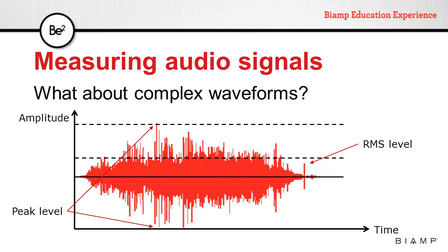But what about complex waveforms? Where is the RMS level, and how do we calculate it? Audio signals are complex waveforms made of multiple frequencies. It is relatively easy to find the peak levels, but calculating the RMS level is far more complex. Two signals that have the same peak level will not necessarily have the same RMS level.